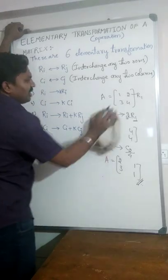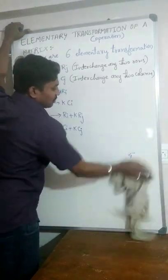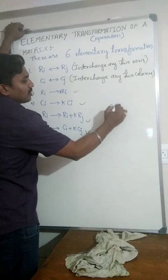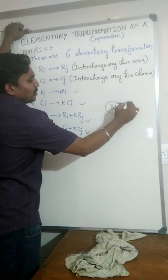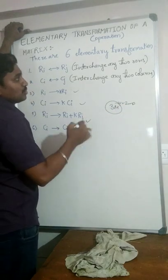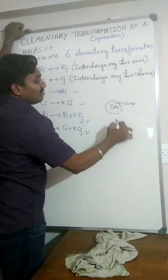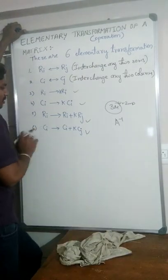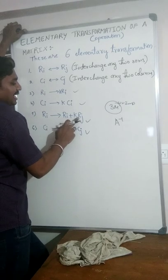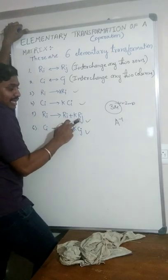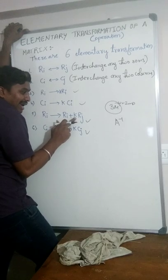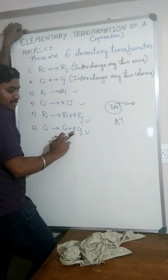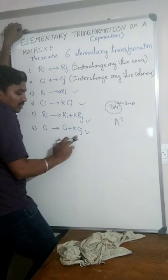The last two operations are very, very important for your main examination — finding the inverse of a matrix using elementary transformation. The operation is: Ri tends to Ri plus K times Rj. This means any row is multiplied by K and added to any other row. In the same way, any column is multiplied by K and the result is added to any other column.